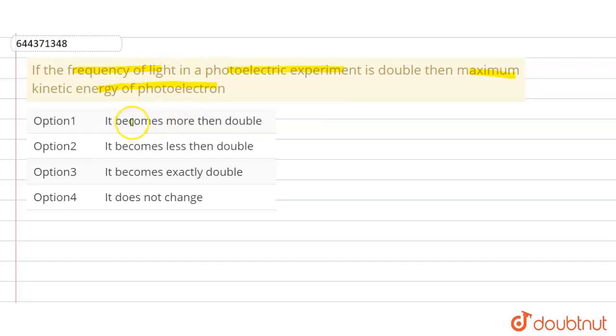In this question, we have to tell that when we double the frequency of the light, then what happens to the maximum kinetic energy of photoelectron.